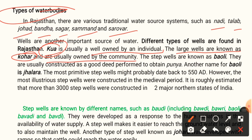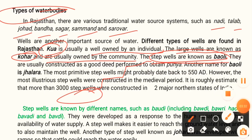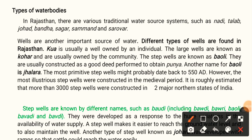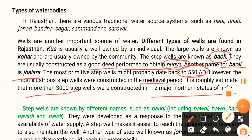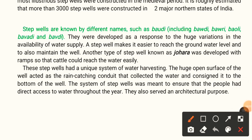Step wells are known as baoli. These are wells where steps lead down to the water level, allowing people to collect water. They are usually constructed as a good deed performed to obtain punya. Another name for baoli is Jhalara. The most primitive step well might probably date back to 550 AD. However, the most illustrious step wells were constructed in the medieval period. It is estimated that more than 3,000 step wells were constructed in two major northern states of India.